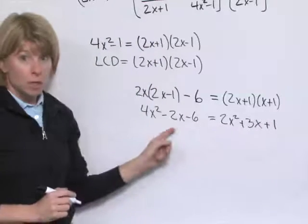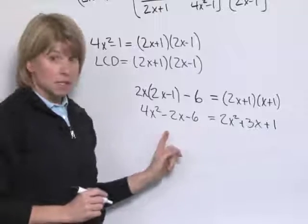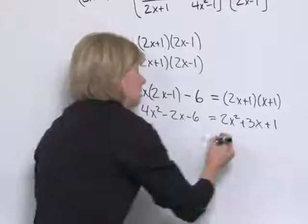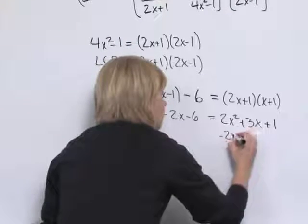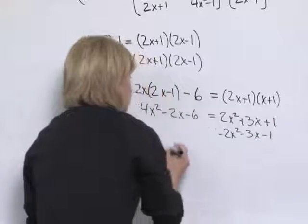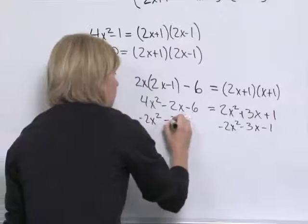Now we've got a quadratic equation, and we need to write this in standard form. So I'm going to subtract each term on the right from both sides. Minus 2x squared minus 3x minus 1 on both sides.